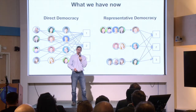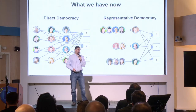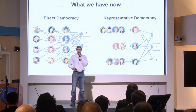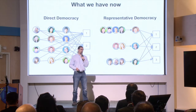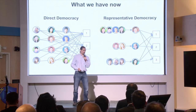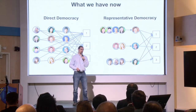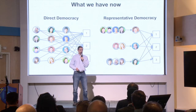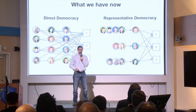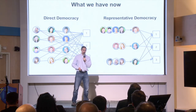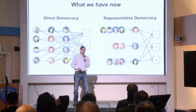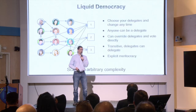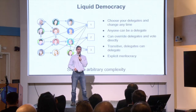Now, direct democracy systems — everybody votes on everything — and this is great for control and accountability, but it doesn't scale very well. You don't have time or expertise to vote on everything. So we generally go to a representative democracy system where you elect someone to make decisions for you. And this has problems with transparency and accountability. You can get distortions from the election process itself, and a lot of times when people are complaining about politics, they're often really complaining about aspects of representative democracy.